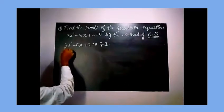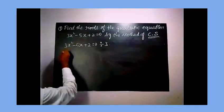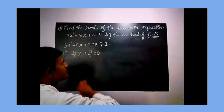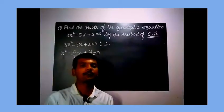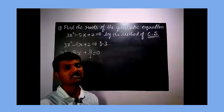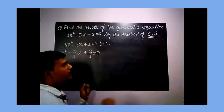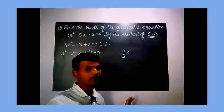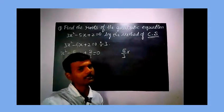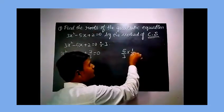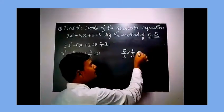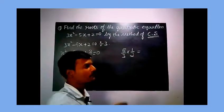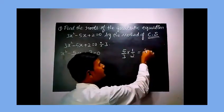Dividing the whole equation by 3, we get: x squared minus 5/3 x plus 2/3 equals 0. Now look at the coefficient of x, which is 5/3. Multiply half by 5/3 — don't consider the sign, whether it is minus or plus, just consider the term itself. We get 5/6.